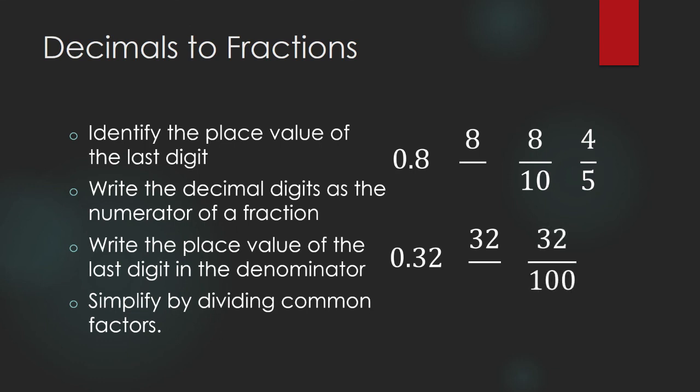And then, we will simplify this by dividing common factors. What do you think would be the common factor here? 32 over 100, that is equal to 16 times 2, and 100 is 50 times 2. 2 divided by 2 is 1, so you are left here with 16 over 50.